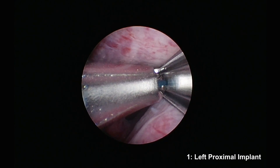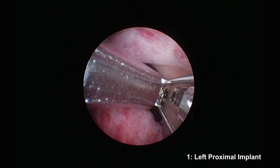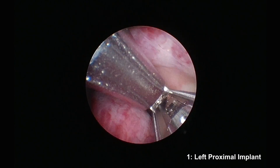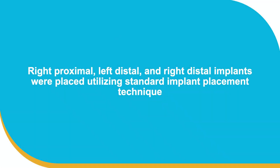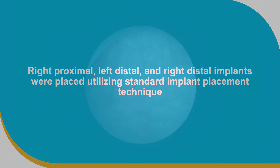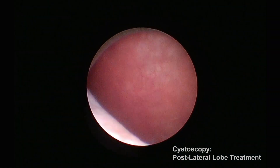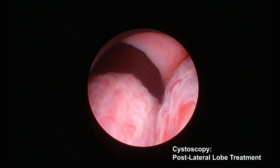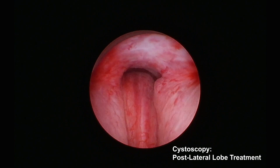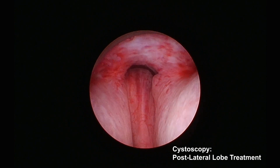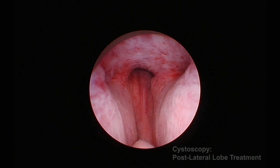I carefully pass over the bladder neck and OML tissue to minimize mucosal contact and maintain visualization. The right proximal and both distal implants are placed utilizing the standard implant technique, for a total of 4 lateral lobe implants. Using the UL-2 with an inserted scope seal, I visually assess the placed implants. I see that, though we have created an anterior channel, the OML remains obstructive.